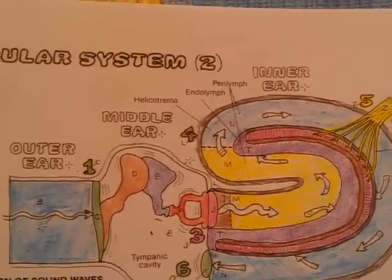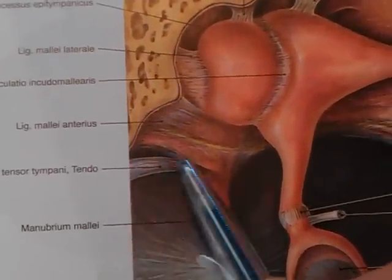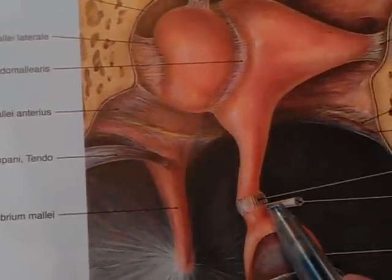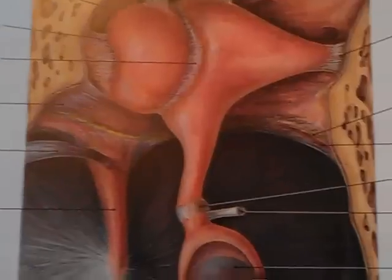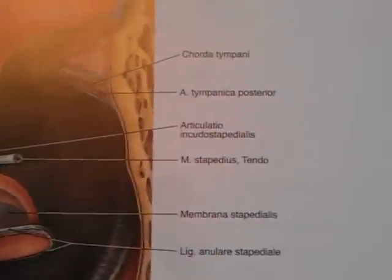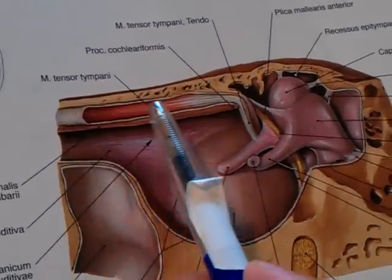Then you have the muscles of the tympanic cavity. You have two muscles: the musculus tensor tympani and musculus stapedius. These are the tendons. And here you can see the musculus tensor tympani where it goes.